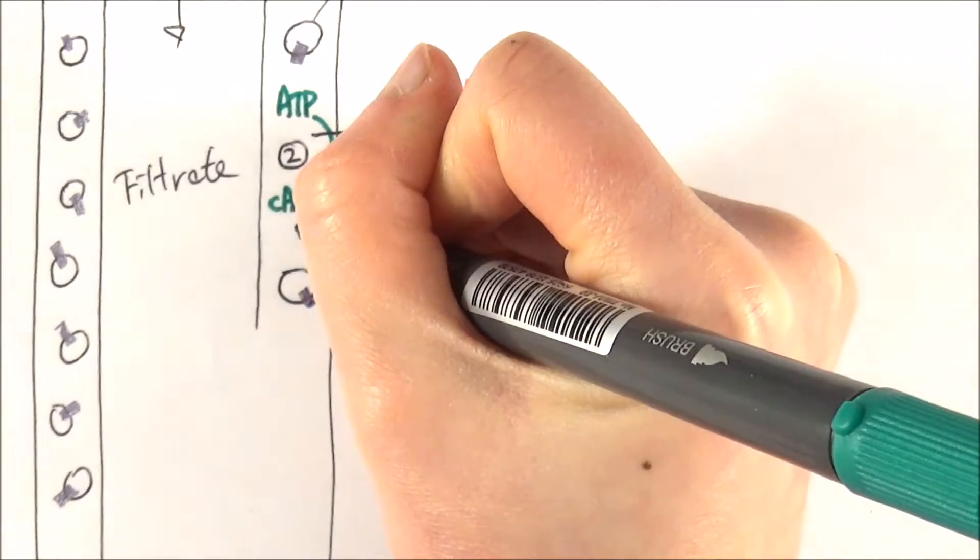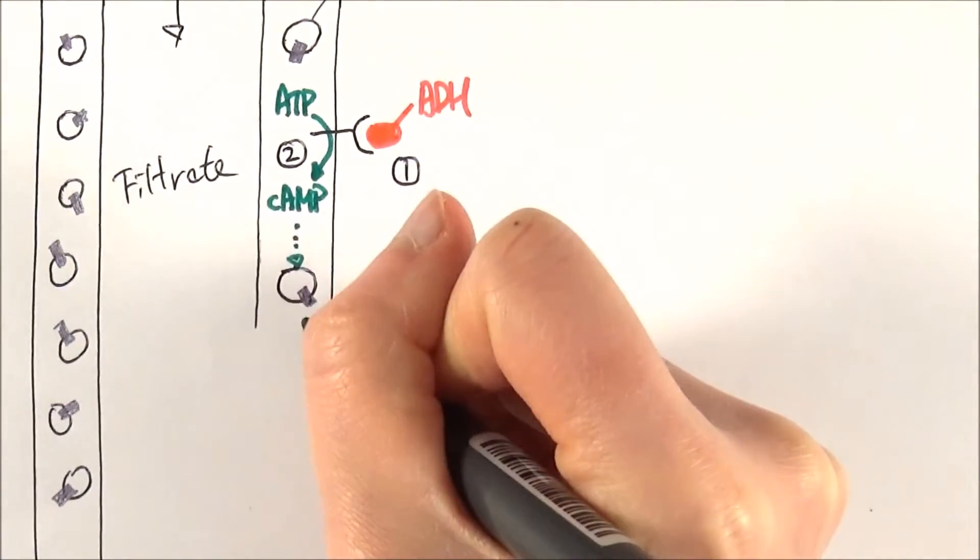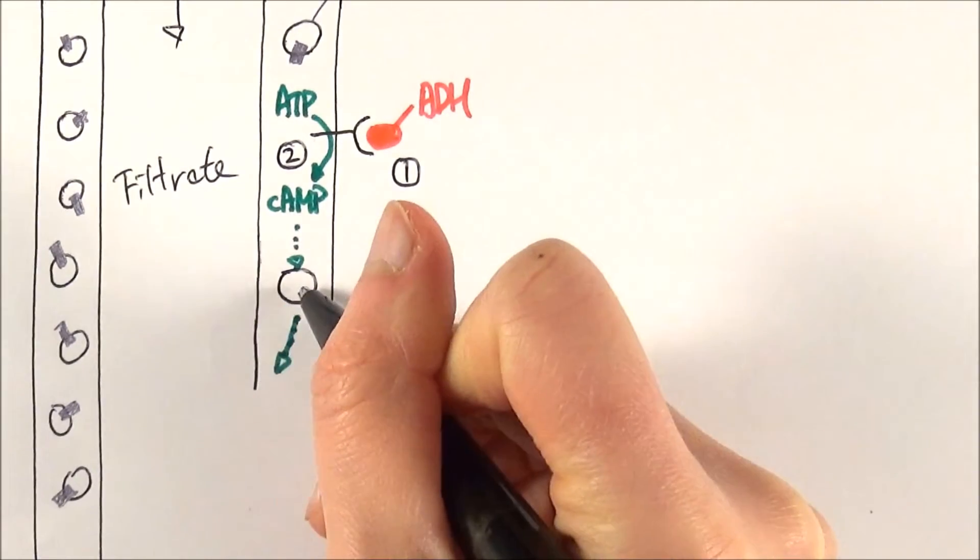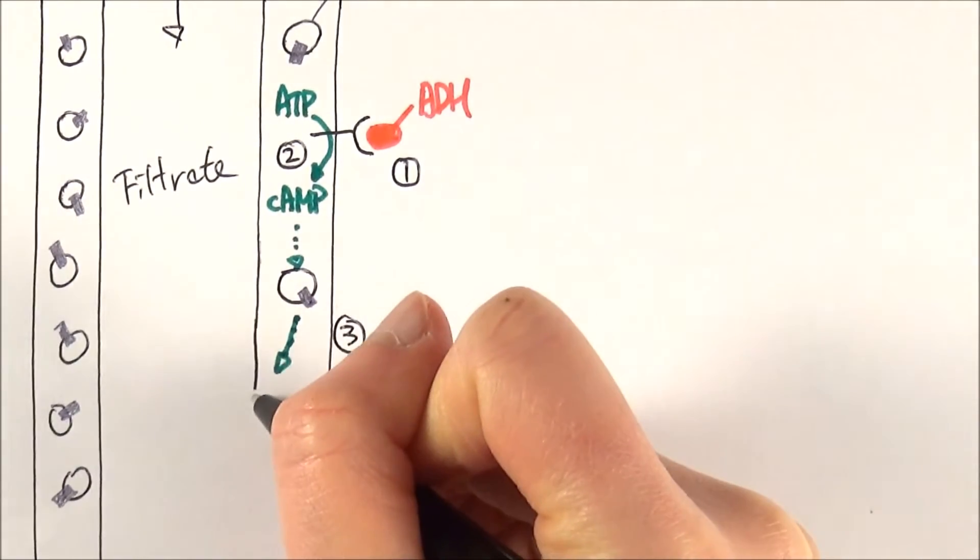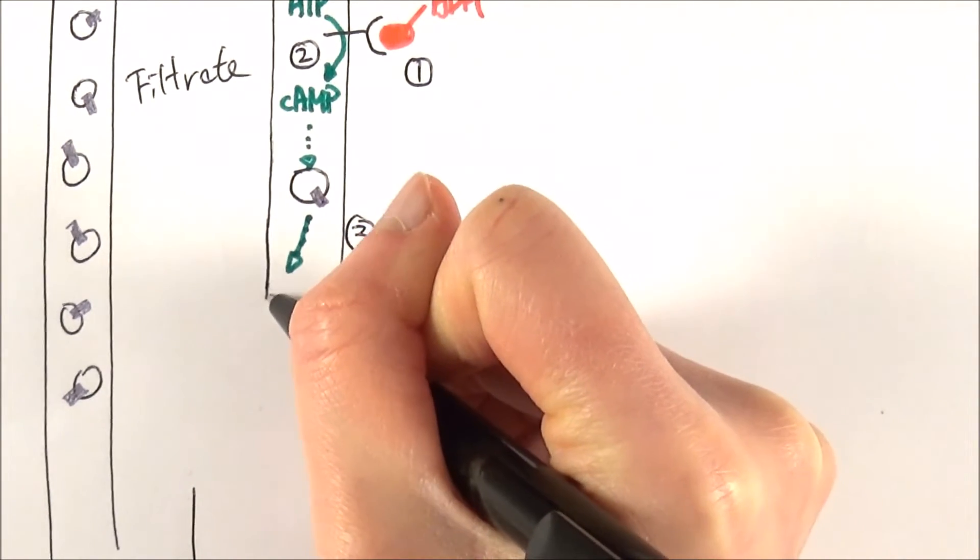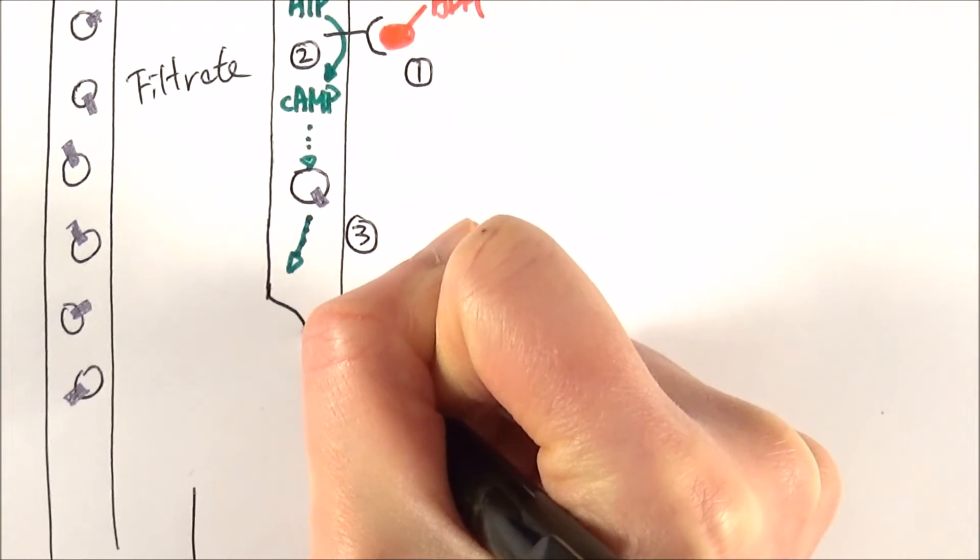Because it is the secondary messenger, it will basically tell the vesicle containing the aquaporins to move to another area, like that. And so therefore what happens is as the vesicle moves towards the plasma membrane here, it can fuse with the plasma membrane of the inner wall of the collecting duct, so like this.